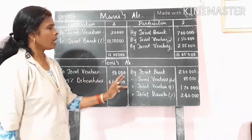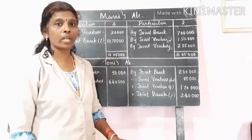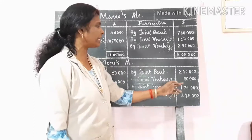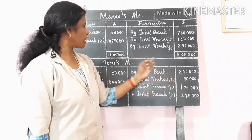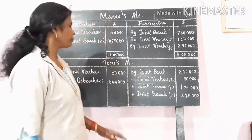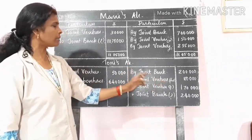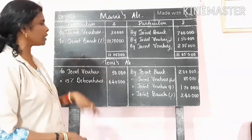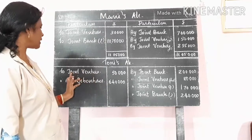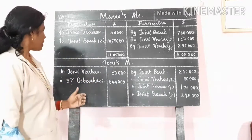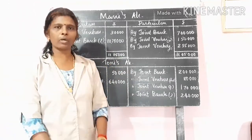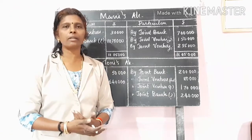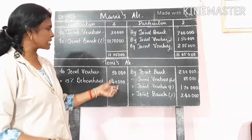Then Tony's account. Tony's account is opened for Rs. 2 lakhs. Rs. 2 lakhs joint bank account is transferred to the deposit. The joint bank account is transferred accordingly. Tony's share of profit is Rs. 1,70,000 — this is from the joint venture. That means the plant has a value of Rs. 50,000. He has a debit bank account. Then there are two sides to the joint venture. The debit side shows the joint venture. Then 15% debenture — we have Rs. 7 lakhs in the debenture. That is, Rs. 6,40,000 value in the debenture.